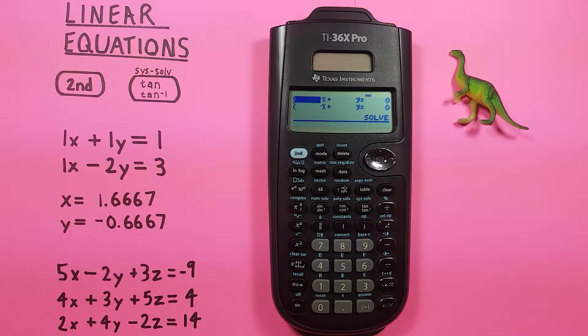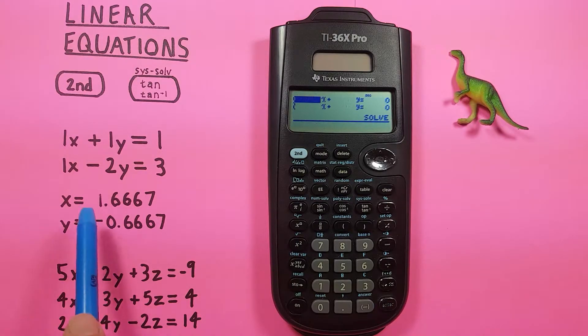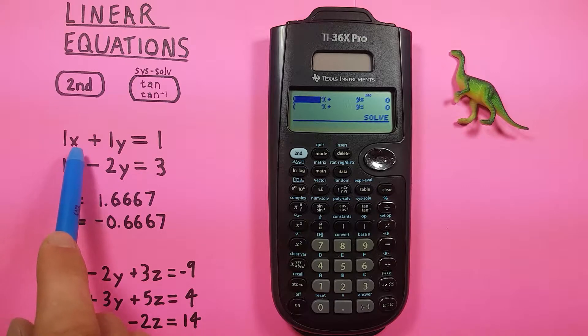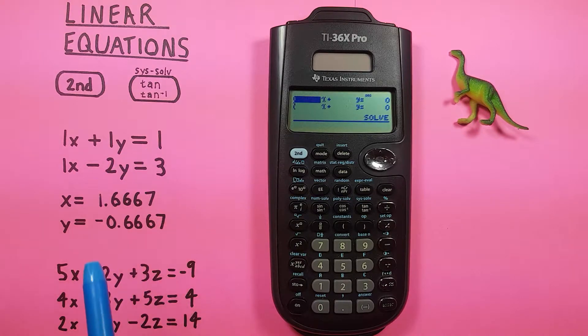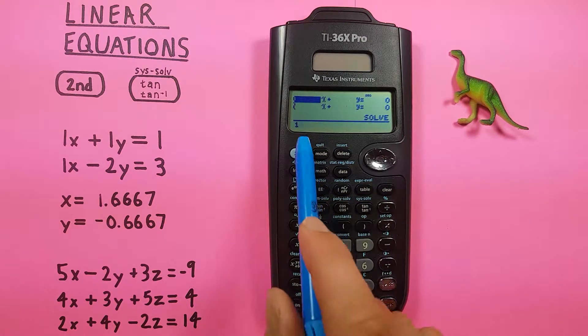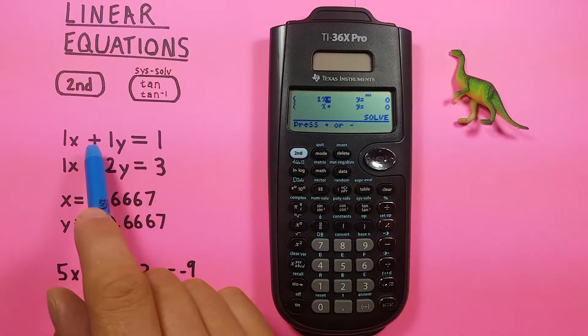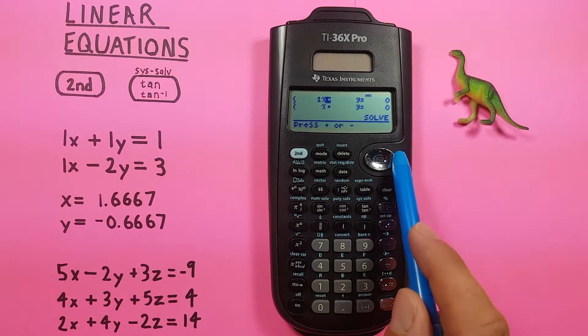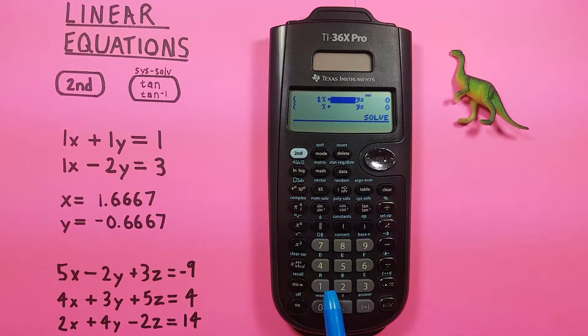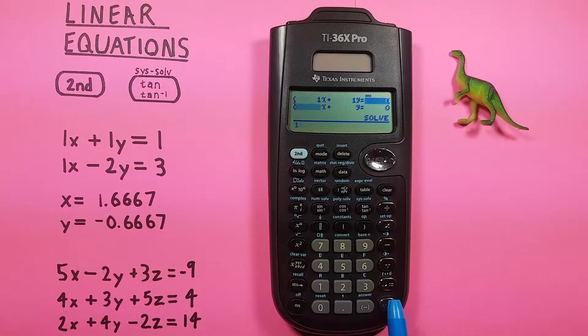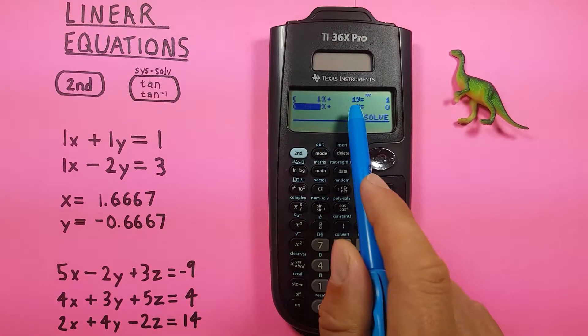Now what we want to do is enter in our equations. So our first example will be this here. First equation being 1X plus 1Y equals 1. So we enter that, our first variable is 1X, enter, plus, and then 1Y, equals 1. There we go, it's entered, 1X plus 1Y equals 1.